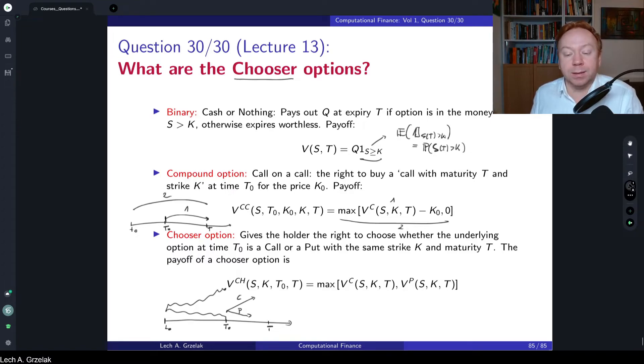In essence, chooser option is an option where we can choose between whether we buy call or put options. An important takeaway is that there is additional time T0. This is the time where client can decide whether he would buy a call or put. And this value is in the future. So this time T0 is in the future. Otherwise, this would be rather trivial exercise if it would be time t0 today. So this is not today. T0 has to be later, further from today.